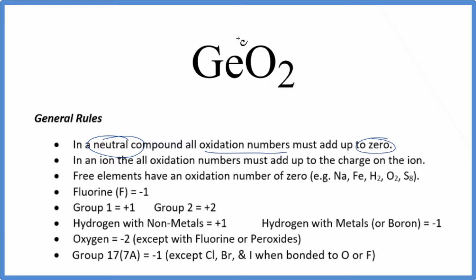We won't find this Ge, this germanium, here on our list of rules, but we do know that oxygen is almost always minus two with just a few exceptions. So each oxygen has an oxidation number of minus two.